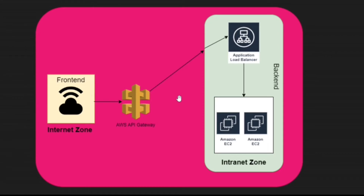I hope your understanding is now clear about how to connect the internet zone to the intranet zone. If you come across such a requirement in your project, you should now be able to figure it out. Don't miss my next lecture, where I'm going to show you everything in practice — specifically how to register this load balancer under the API gateway. That's all from this lecture.